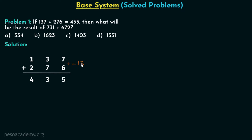From 13 we get the carry and the intermediate sum. The intermediate sum is 5, so we have 13 equal to carry plus 5, giving carry equal to 8. This 8 when transferred to the next column is written as 1, so 8 is the base of the number system. Therefore we have the octal number system.